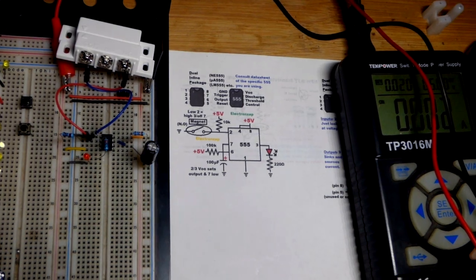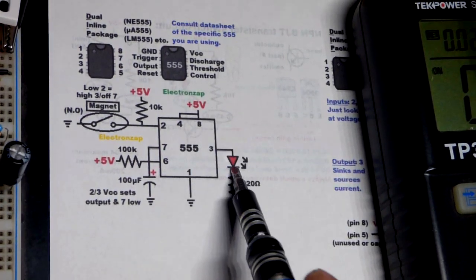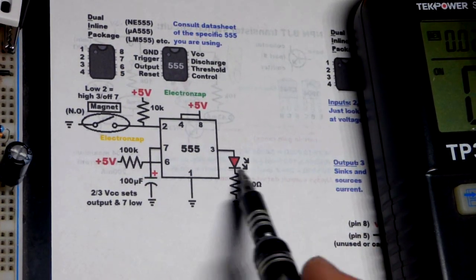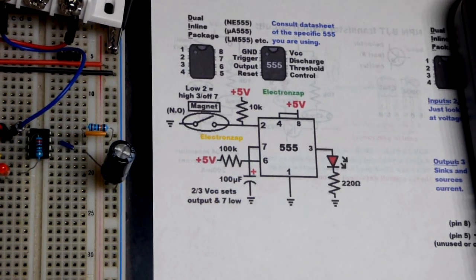Now here's the schematic diagram. We have an LED load, but we're just using that to indicate the output is high. Maybe you want a little LED letting you know that somebody opened up something and removed the magnet from the sensor.